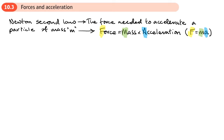So F equals ma: the force needed to accelerate a particle of mass m is force equals mass times acceleration. We can shorten this and write N2L to stand for Newton's second law, F equals ma. Now when we started off doing force diagrams, on a force diagram let's say we've got some sort of mass like this.